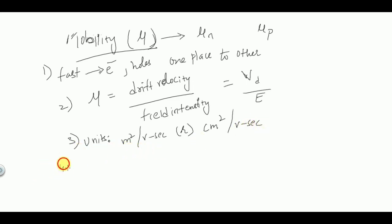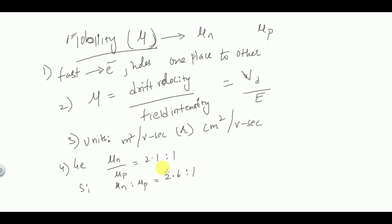For germanium, μₙ : μₚ = 2.1 : 1, and for silicon μₙ : μₚ = 2.6 : 1. So μₙ is always greater than μₚ — electrons move at greater speed than holes in both germanium and silicon. Therefore the current contributed by electrons is greater than that contributed by holes.